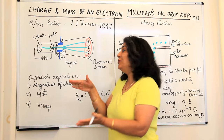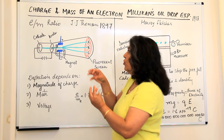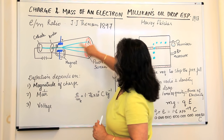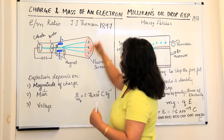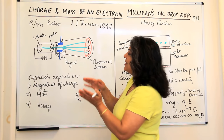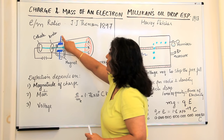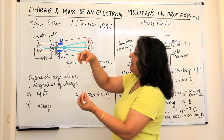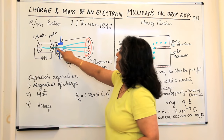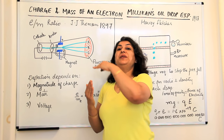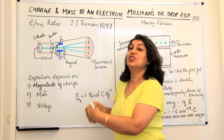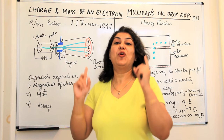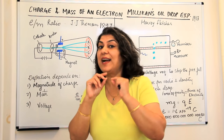He used both the fields together and when he did that, both were countering each other's effects. If the electric field was pushing the ray towards the upside towards A, the magnetic field was pulling it down towards C. He started manipulating the voltage of these plates and the strength of the magnet, arranging both in such a way that he could strike a balance, and the cathode ray would neither deviate towards A nor C but would fall exactly at B, as if there was no electric or magnetic field affecting it.